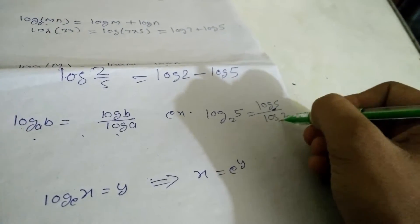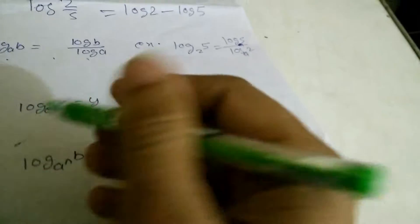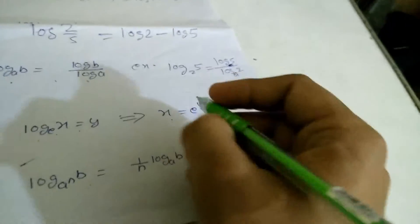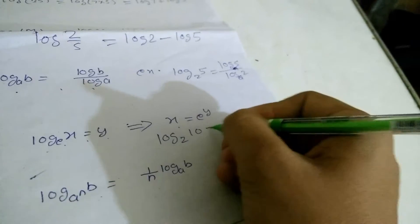If we have log base y of x equal to some value, then we can write x is equal to y raised to that power. For example, if log base 2 of x equals 5, then we can write x is equal to 2 raised to the power 5.